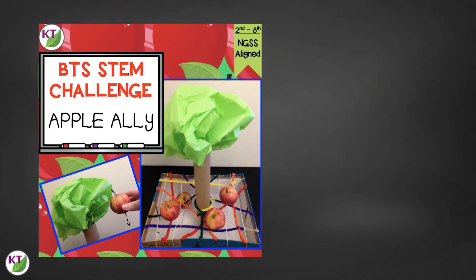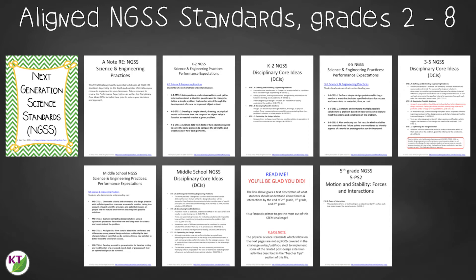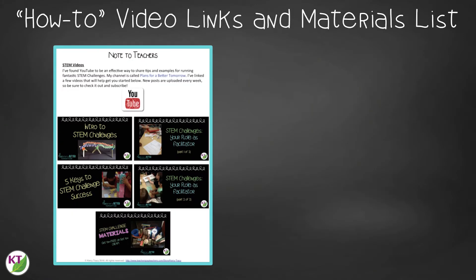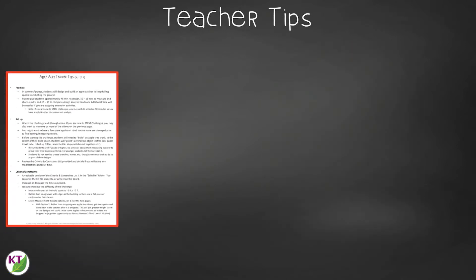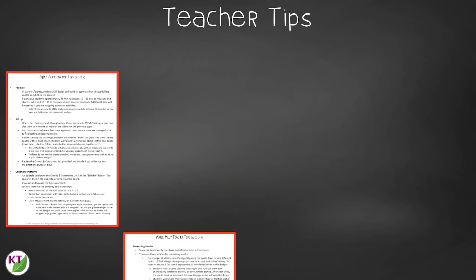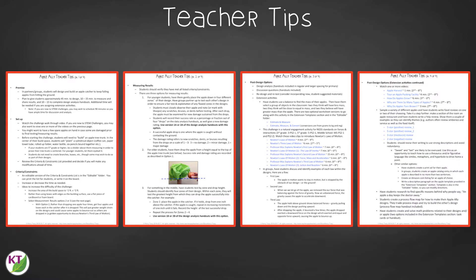Want to save yourself prep time and planning time? Take a look at the resource. This resource contains everything you need, including modifications for use with second through eighth graders. You'll still need to gather the simple materials, but the rest has been done for you. You'll get aligned Next Gen Science Standards for engineering and physical science, links to my STEM challenge how-to videos, and the Apple Ally materials list. In teacher tips, you'll find premise and setup, how to increase or decrease difficulty through the criteria and constraints list, measuring results, and cross-curricular extension suggestions, including links to videos about Newton's laws of motion.